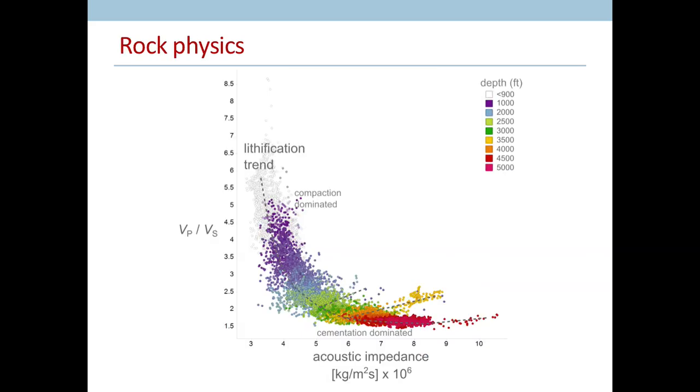Here's what one well looks like in a standard VPVS acoustic impedance crossplot. The overall depositional trend is offset, or perturbed, when there is this diagenesis. The cementation effect is a significant deflection away from the trend.